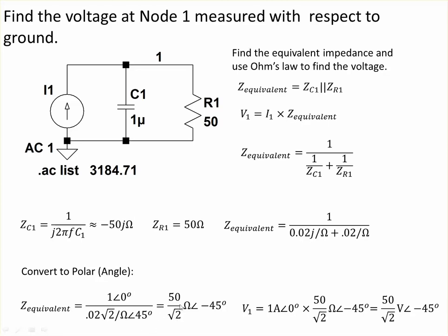But then when we divide everything out, we get 50 divided by the square root of two minus 45 degrees. The one now is just one amp at zero degrees times the equivalent impedance. And so now for our voltage, we get 50 divided by the square root of two volts at an angle of minus 45.